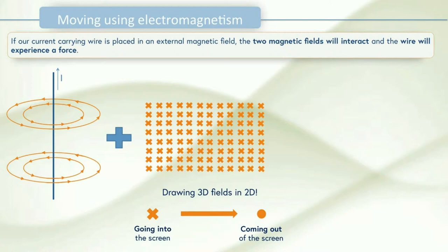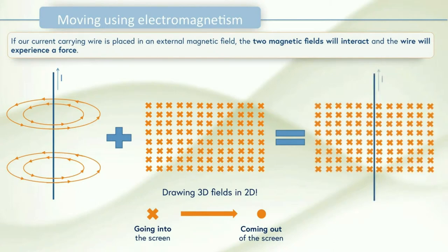So what we're going to do is combine these two magnetic fields together and this acts like superposition. So we'll have the fields reinforcing in some places and cancelling out in others. This gives us an overall field effect when we add them together which means our wire experiences a force shown by the green arrow so it's actually going to move.